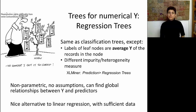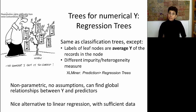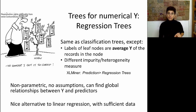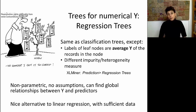Classification trees can be converted into regression trees, meaning that they can also be used to predict a numerical value, similar to linear regression. Many of the steps we've seen earlier are going to remain identical. First of all, when we look at the terminal nodes, instead of class labels at the end of each node, we're going to use something such as the average of the numerical y in that node.